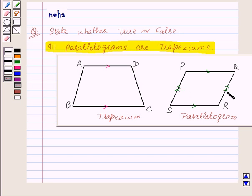That means a parallelogram satisfies all the conditions of a trapezium and thus a parallelogram is a special trapezium with both the pairs of opposite sides parallel. Thus our statement all parallelograms are trapeziums is true.